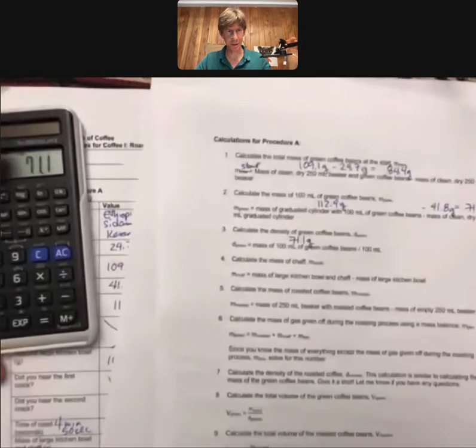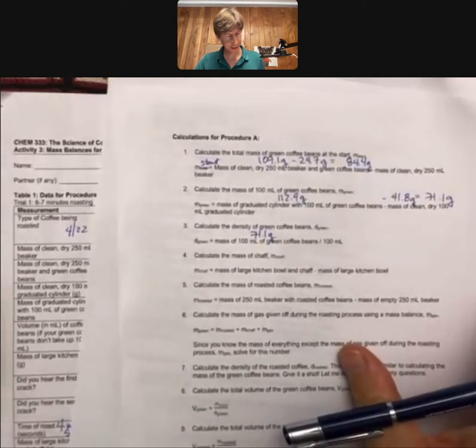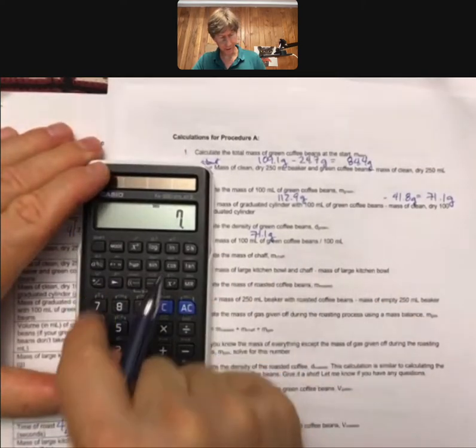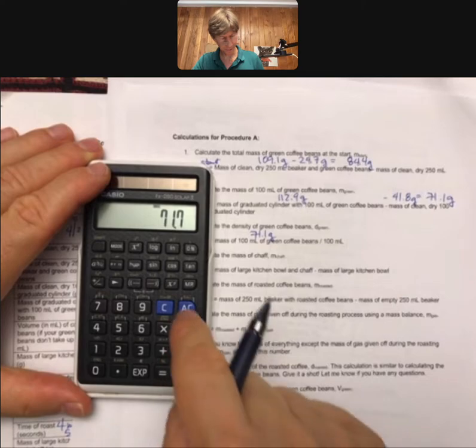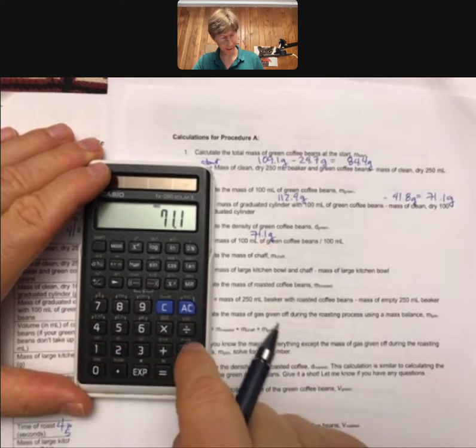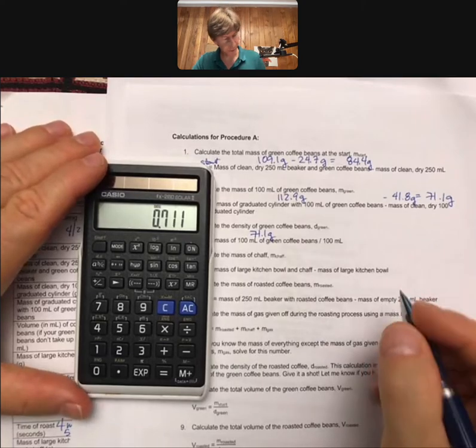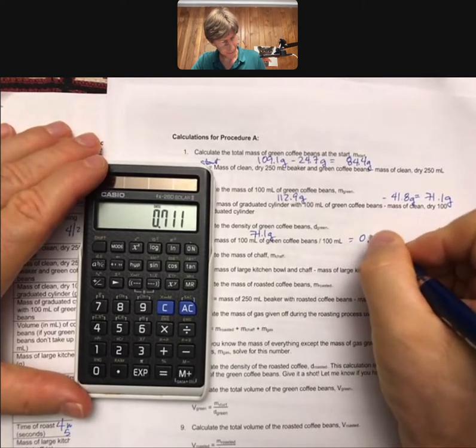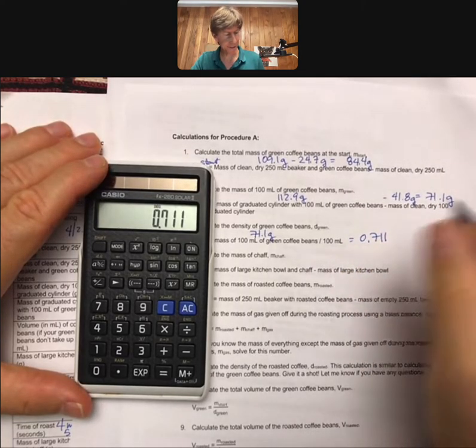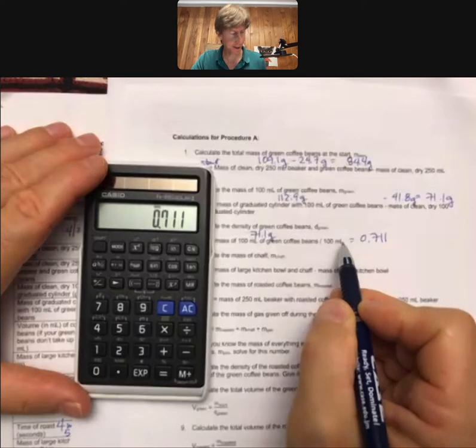And I can zoom in here a little bit. So 71.1 divided by 100, I get 0.711, and this time my units are grams per milliliter.